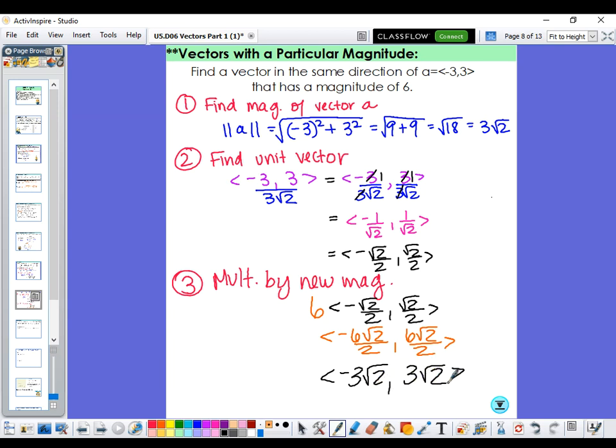That would be a vector in the same direction as the original. It looks like it is starting at the origin and going out into the second quadrant. But instead of having the magnitude that <-3, 3> has, it now has a magnitude of 6.